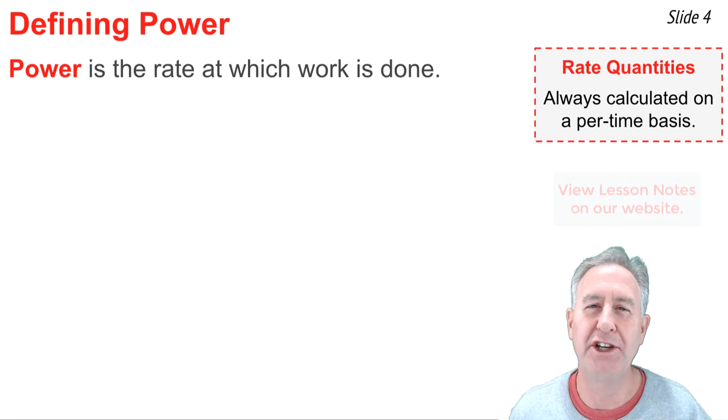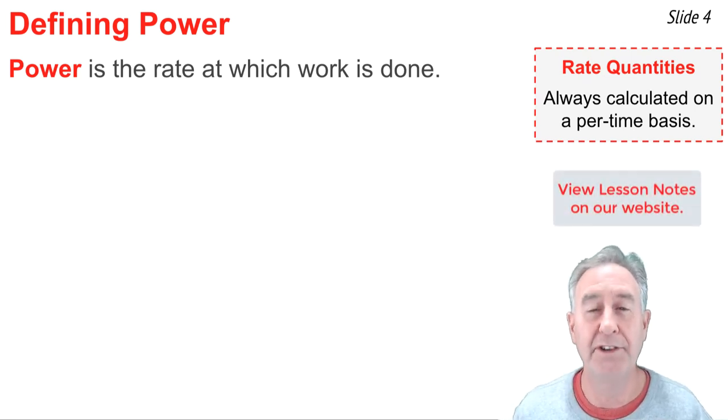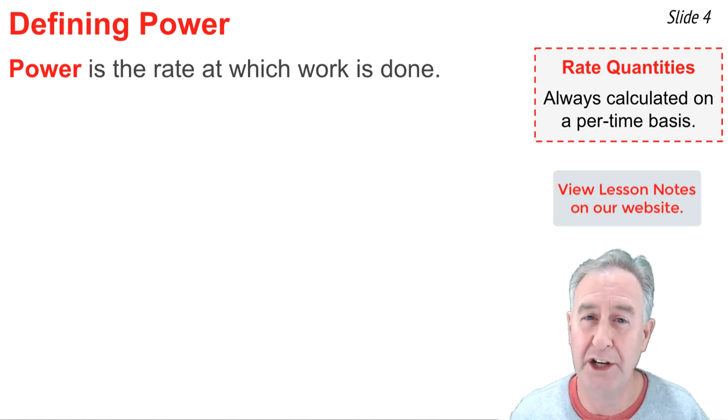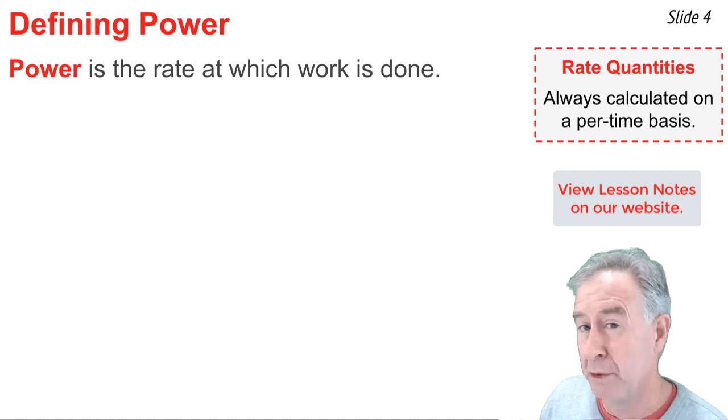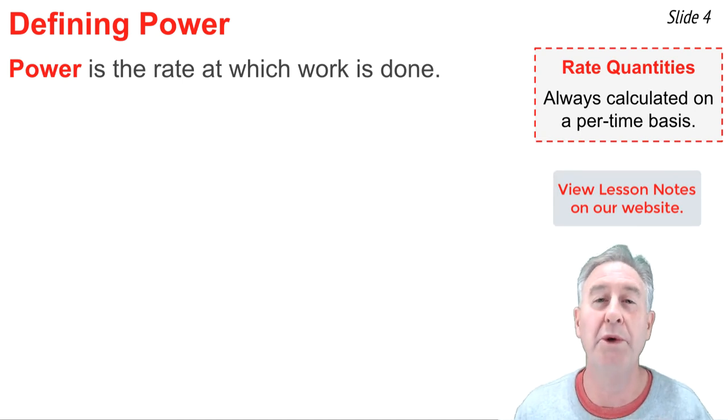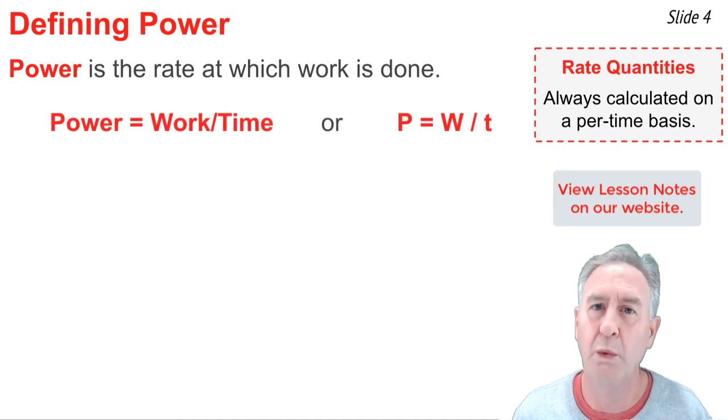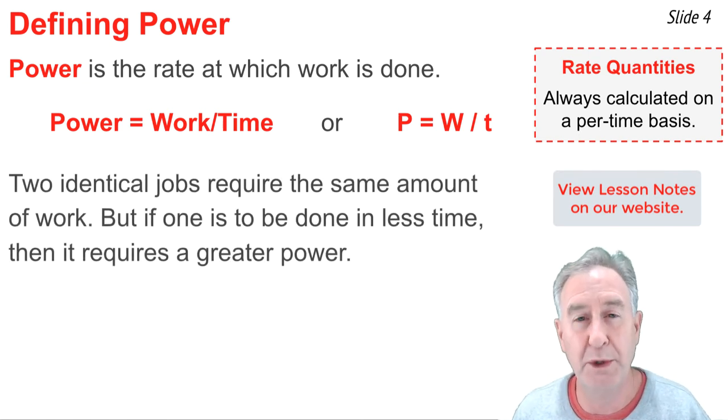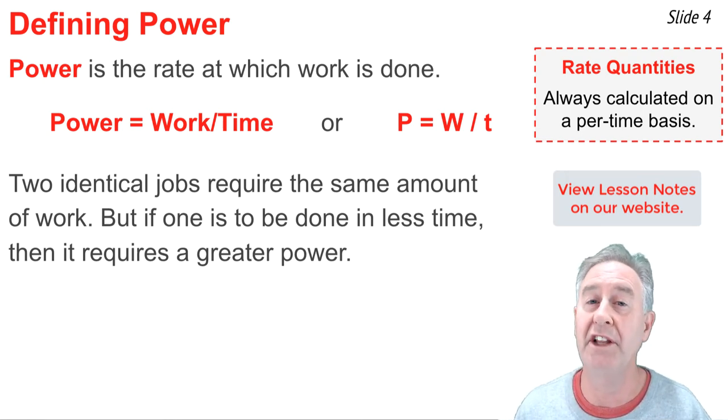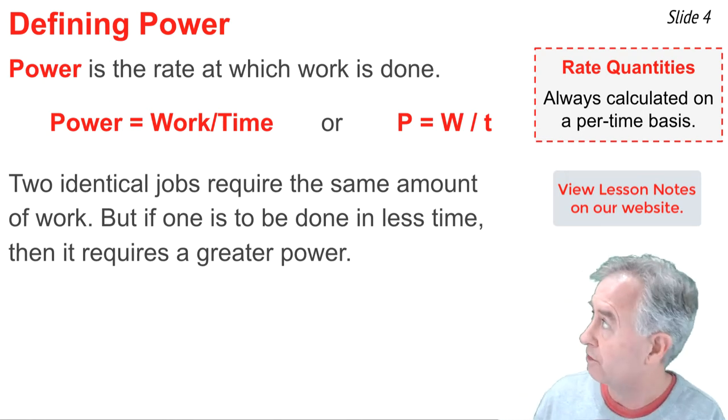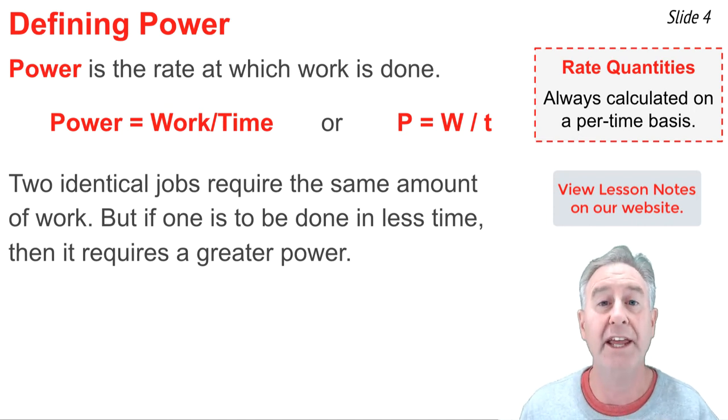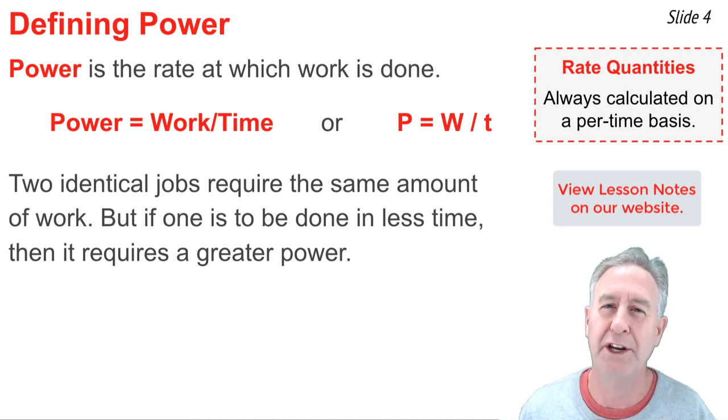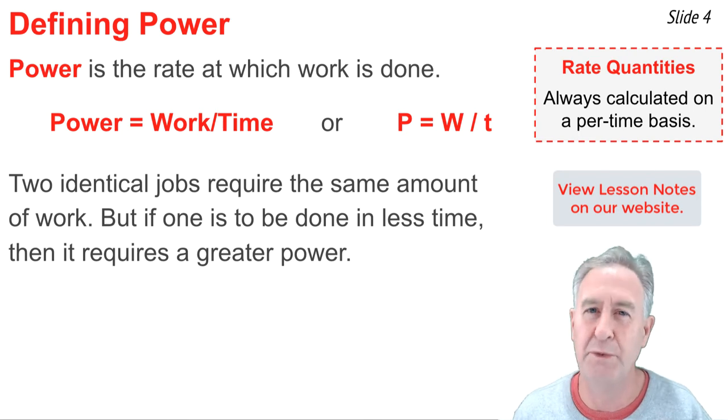The textbook definition of power is the rate at which work is done. In physics, rate quantities are quite popular, and they're always calculated on a per-time basis. So when we say power is the rate at which work is done, what we mean is that power equals work per time. Or, in symbol form, P equals W per t. You could have two identical jobs, each requiring the same amount of work, but the one that is done in the least amount of time is the one that has the smallest denominator, and as such, it would be the one with the greatest power. It's the one that's done at the greatest rate.